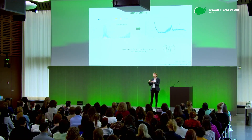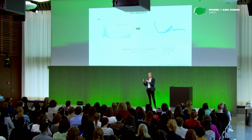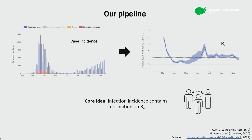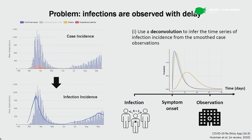The core idea of our pipeline is to go from observed case incidence — the daily numbers of people newly infected with the disease — and arrive at an estimate of the effective reproductive number. At the core, infection incidence contains information on R_E because it describes how many infections each single infection creates in turn. The real problem is that we cannot observe infections directly — we only know with a certain delay that someone was infected when they start showing symptoms, get tested, or end up in the hospital.